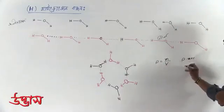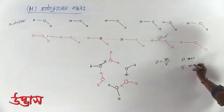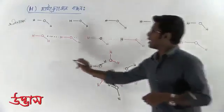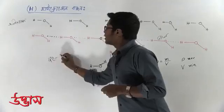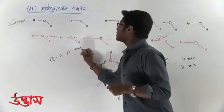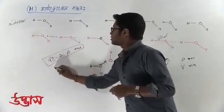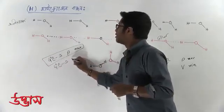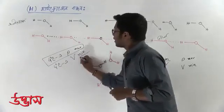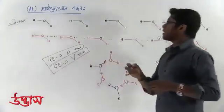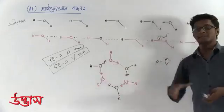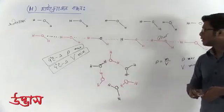So, the value of density is maximum when the volume is minimum. If we say that the density at 4 degrees Celsius is maximum, then the volume at 4 degrees Celsius must be minimum. The density at 4 degrees Celsius is at its maximum value.